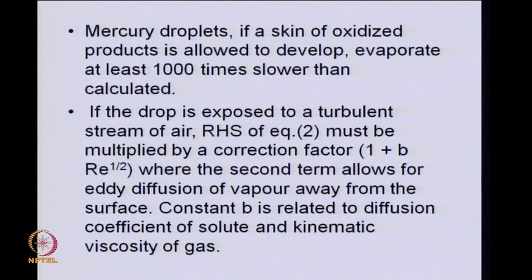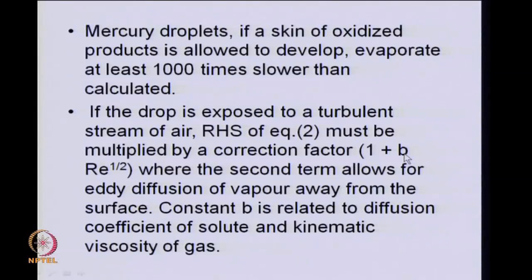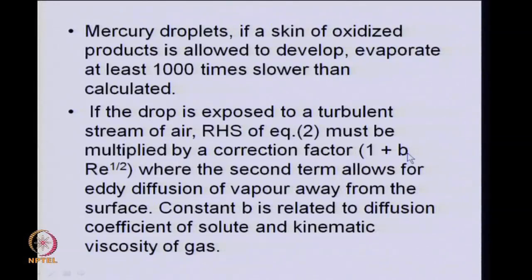For turbulent conditions characterised by Reynolds number, an increase in the rate of evaporation is brought in through this Re^(1/2) term. The constant b depends on properties relevant to mass transfer, including the diffusion coefficient and the kinematic viscosity of the gas — in mass transfer terms, b must contain the dimensionless Schmidt number. In particular, b comes out to be 0.6 times Sc^(1/3) over a wide range of conditions, from the Ranz–Marshall correlation or Fröessling equation.